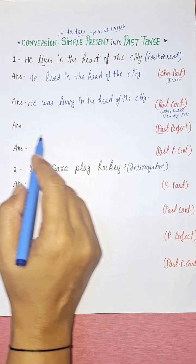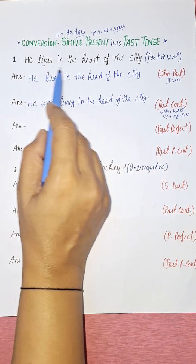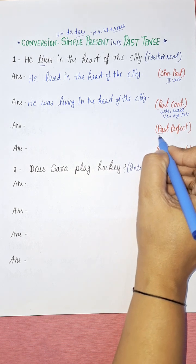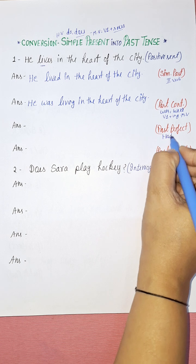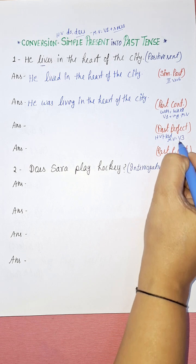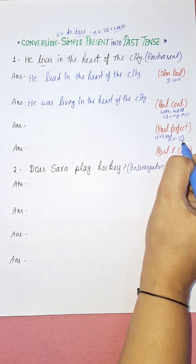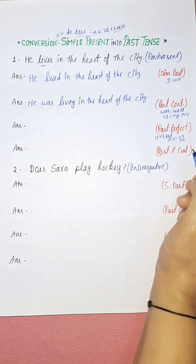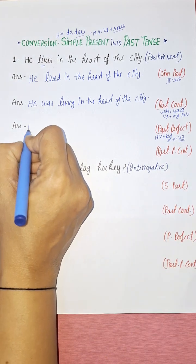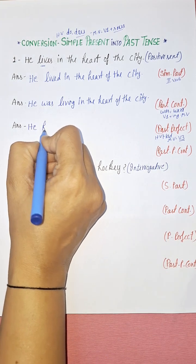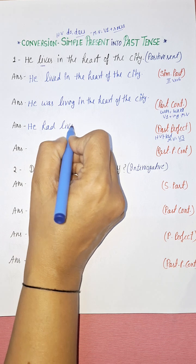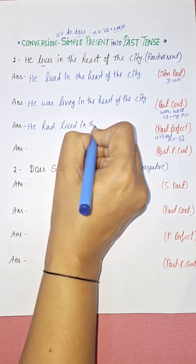Now convert into past perfect tense. The past perfect helping verb is 'had', and as a main verb we always use the V3 form, also known as the past participle form. So 'he leaves in the heart of the city' becomes 'he had lived in the heart of the city.'